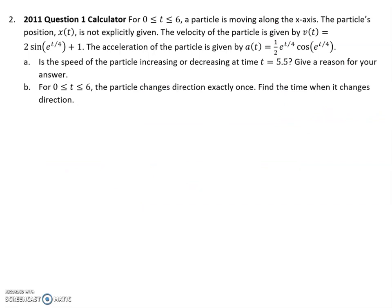For this next question, we've got a particle moving along the x-axis. We don't know the equation for the position, but we do know the equation for the velocity. Notice this is a calculator problem. I also have an equation for the acceleration, which is the derivative. Is the speed of the particle increasing or decreasing? If they're asking if the speed is increasing or decreasing, they're asking is it slowing down or speeding up? So at time t equals 5, for part a, then I would find the velocity at 5.5 and I would find the acceleration at 5.5.